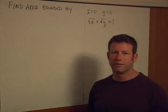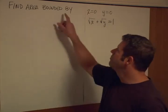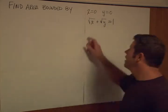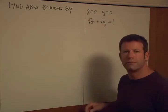Okay, this problem is not that difficult, but it's a little tricky because of the way it's presented. Find the area bounded by these three graphs: x equals zero, y equals zero, and the square root of x plus the square root of y equals one.